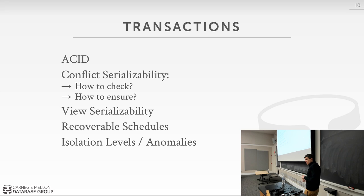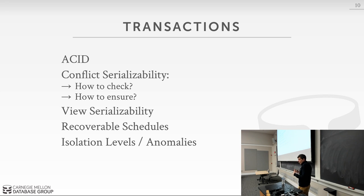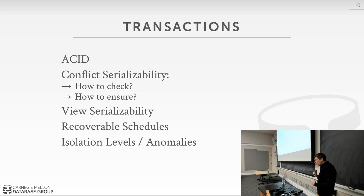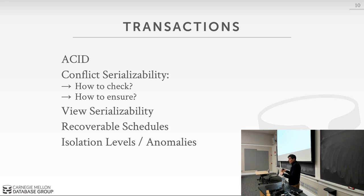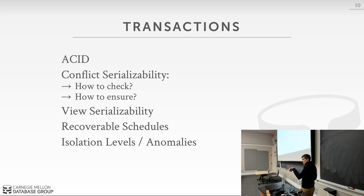We spent a lot of time on conflict serializability and view serializability. You should understand how to check if an execution schedule is serializable or conflict serializable, and how to generate a dynamic schedule on the fly that would be conflict serializable — that's essentially what two-phase locking and timestamp ordering are. Understand what view serializability allows that conflict serializability does not. What does it mean for a schedule to be recoverable? What are the different isolation levels: serializable at the top, read uncommitted at the bottom, then read committed and repeatable read?